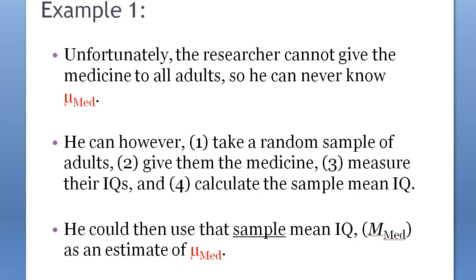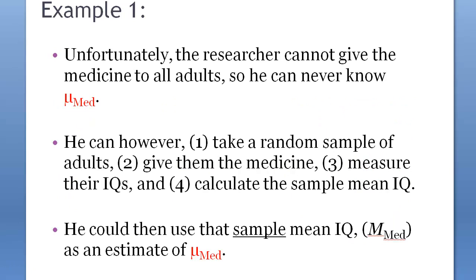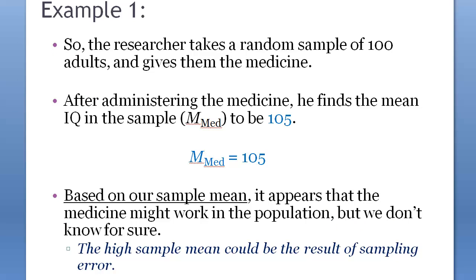Unfortunately, the researcher cannot give the medicine to all adults, so we can never know the true population mean IQ after medication — mu_med. However, he can take a random sample of adults, give them the medicine, measure their IQs, and calculate the sample mean IQ. The researcher takes a random sample of 100 adults, administers the medicine, and finds the sample mean IQ — mean_med — to be 105.